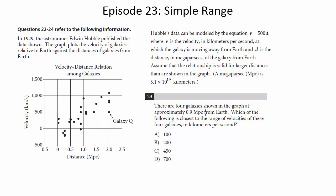23. There are four galaxies shown in the graph at approximately 0.9 megaparsecs from Earth, which the following is closest to the range of velocities of these four galaxies in kilometers per second.